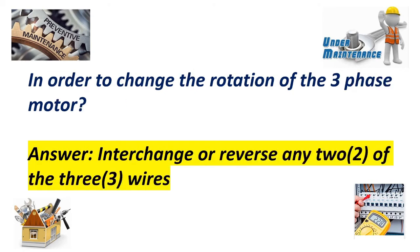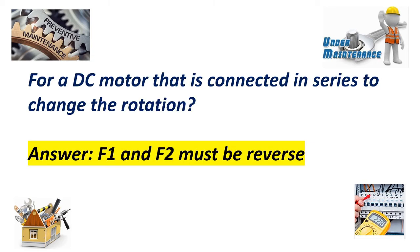In order to change the rotation of a three-phase motor: Answer: Interchange or reverse any two of the three wires. For a DC motor that is connected in series, to change the rotation: Answer: F1 and F2 must be reversed.